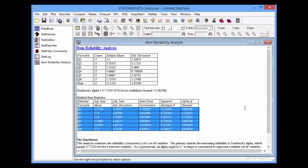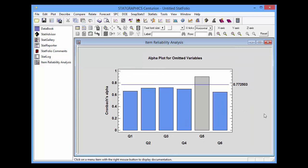StatGraphics also creates a plot of the alphas when omitting each of the variables, one variable at a time. Here you see Cronbach's alpha on the y-axis and the values that would be obtained if you removed one variable at a time. Only the removal of question 5 would cause Cronbach's alpha to go up, and it would go up substantially.